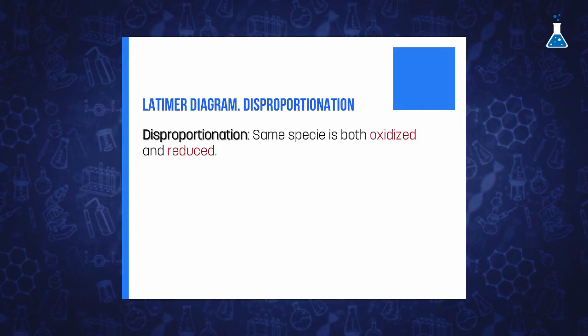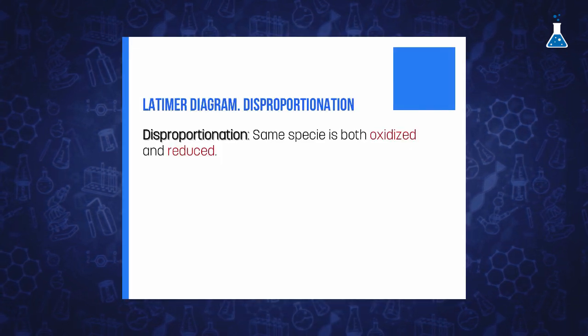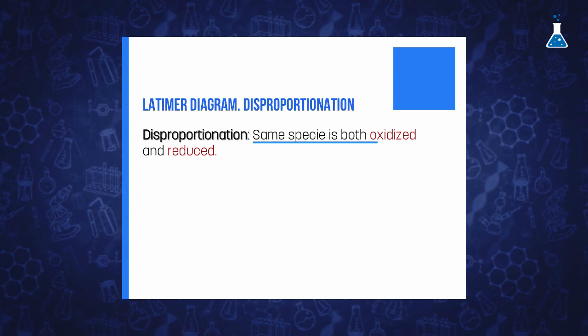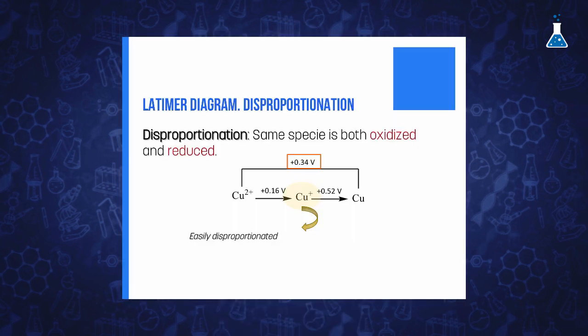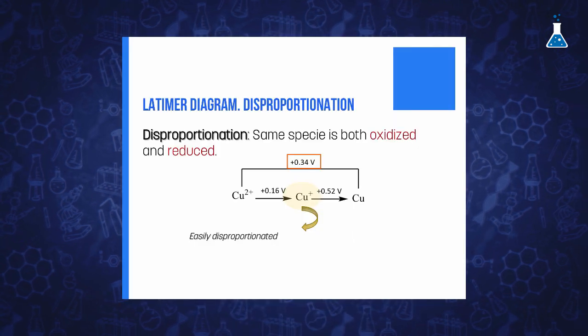A Latimer diagram allows us to easily identify when an element will undergo disproportionation, which means that a single substance is both oxidized and reduced. When the species on the right has a higher electrode potential than the species on the left, the species in the middle will disproportionate.